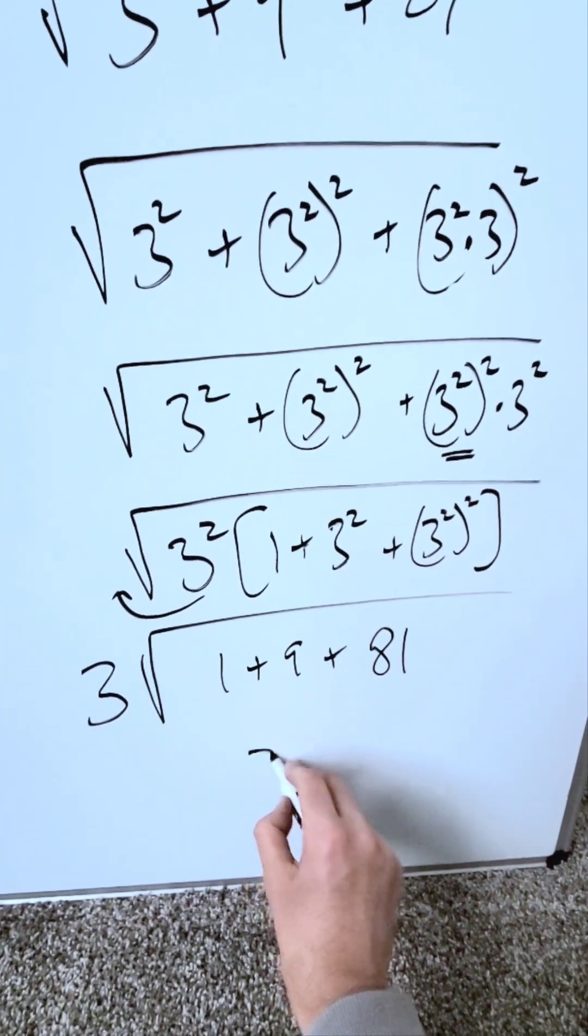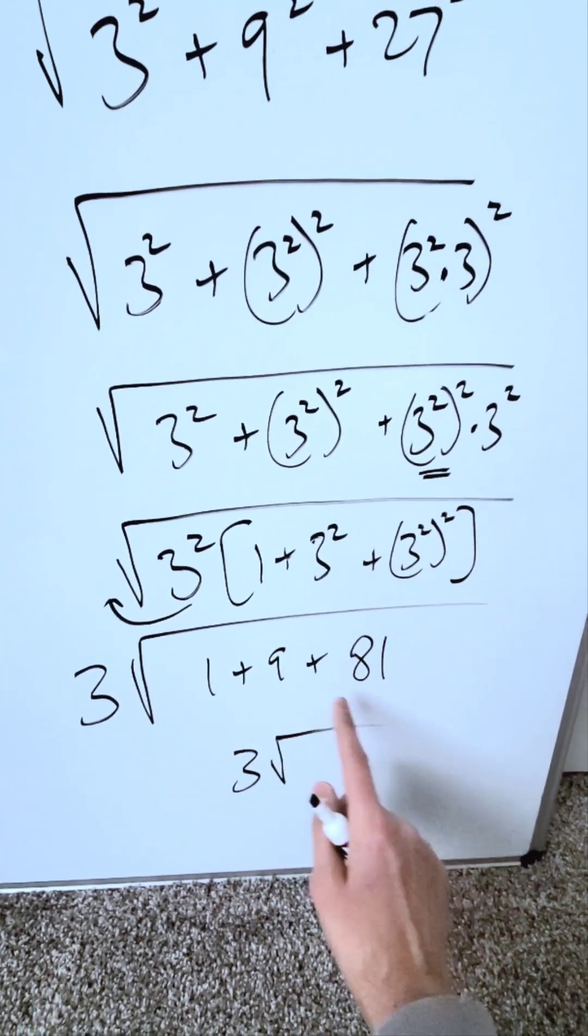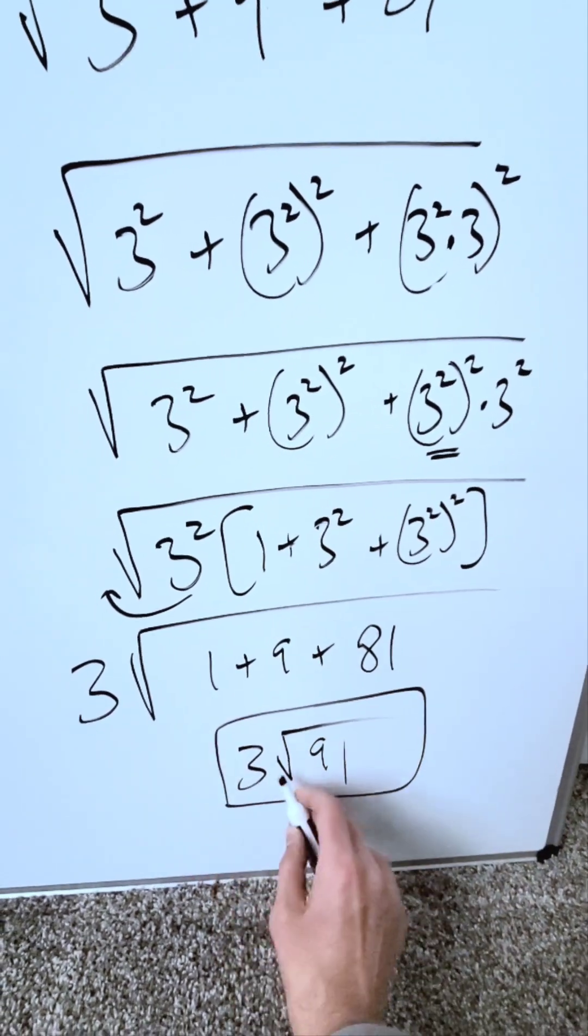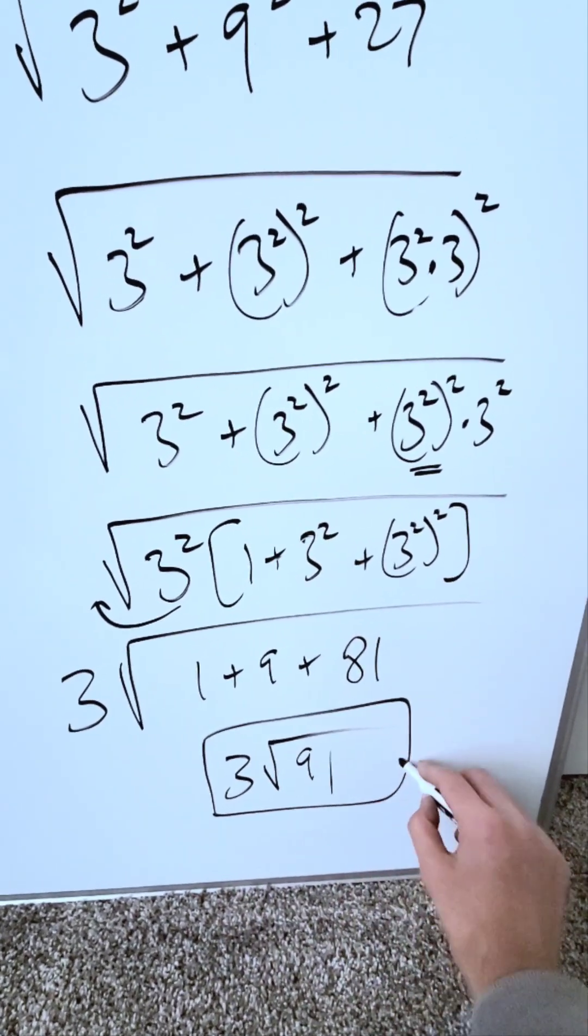Now we can complete this. Our end result is 3 multiplied by the square root of this. 91. And this answer here is good. 3 times the square root of 91. It will be good.